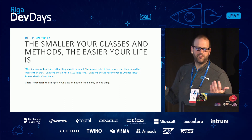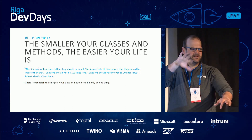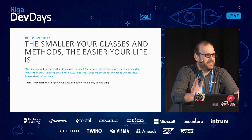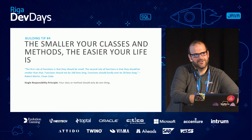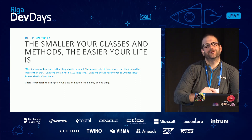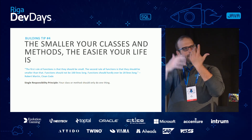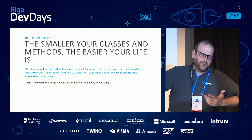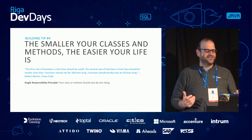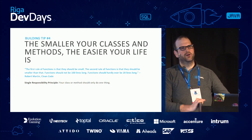Building tip number four: make smaller methods. The reigning champion for the longest method I've seen: I used to work for the State of Nebraska, and the largest method I've ever seen in production was 15,000 lines of code in a single method with 29 nested if-blocks — it took me three hours to count. Visual Studio kept crashing. Testing that code is soul-sucking and impossible. The smaller your methods are, the easier they are to test.